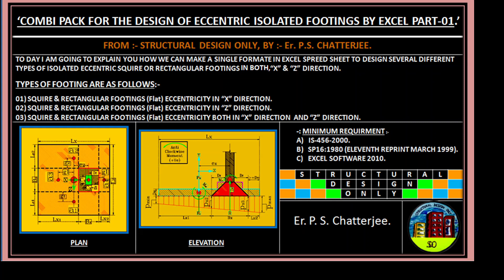Types of footings are as follows: square and rectangular footing flat with eccentricity in X direction, eccentricity in Z direction, and eccentricity both in X and Z direction. Minimum requirement for this: IS-456-2000, SP-16, and Excel software 2010 onward.